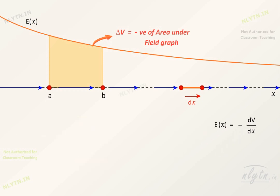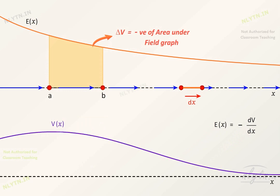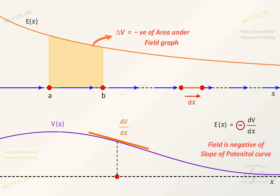That is, if we plot the potential graph along an axis, then the negative of the slope of the potential curve at a point gives the electric field at that point along that axis. Note that the function of potential along an axis gives us the component of electric field along that axis only. So, in order to find the component of field along an axis, we should know the function or variation of potential along that axis.